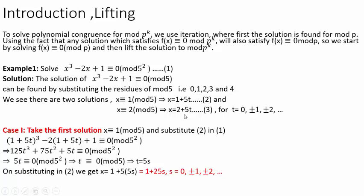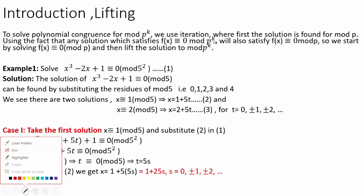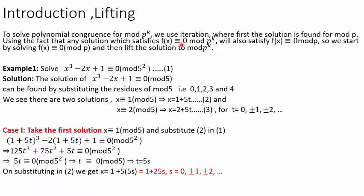In general, a polynomial is written as f(x). Here, we will be using a particular case where our modulus is p to the power k. So, if we are asked to solve a polynomial congruence f(x) ≡ 0 mod p^k, we will use the fact that any solution satisfying this will also satisfy f(x) ≡ 0 mod p. So, we start by solving this congruence and whatever solution we get, we lift that to modulus p^k. This will be better explained using an example.